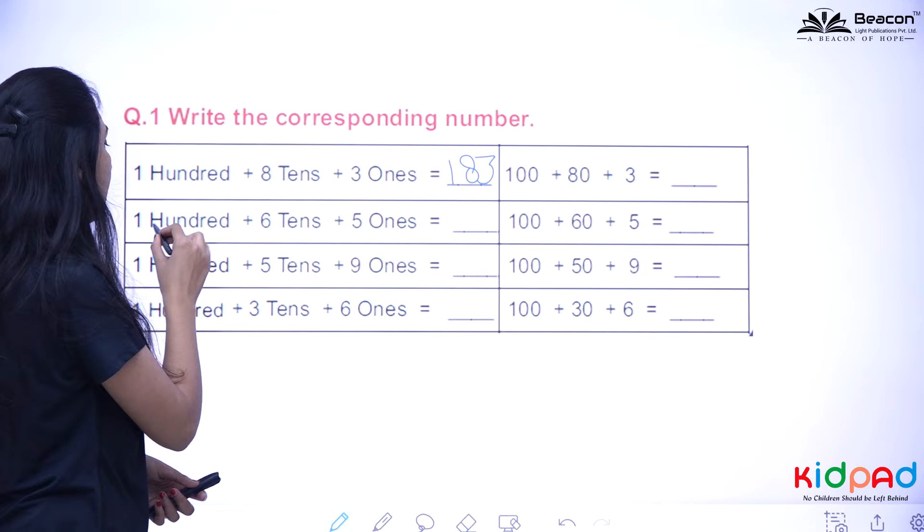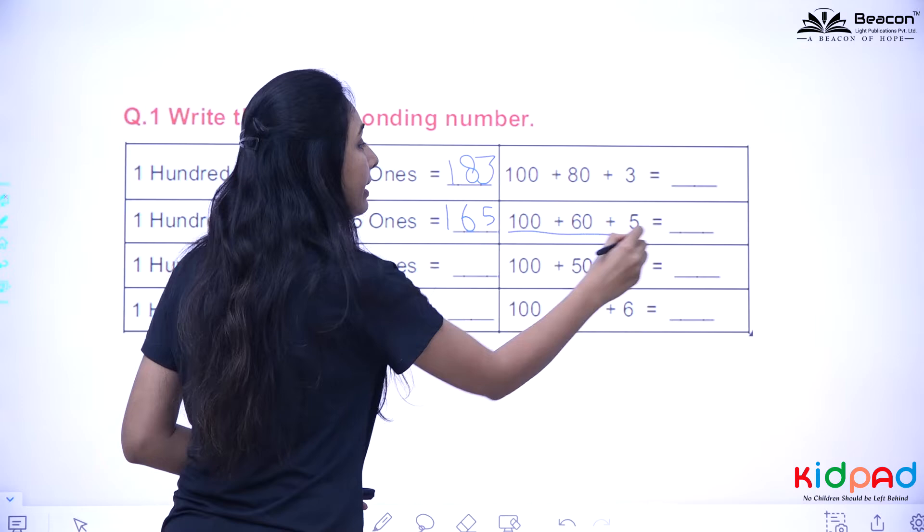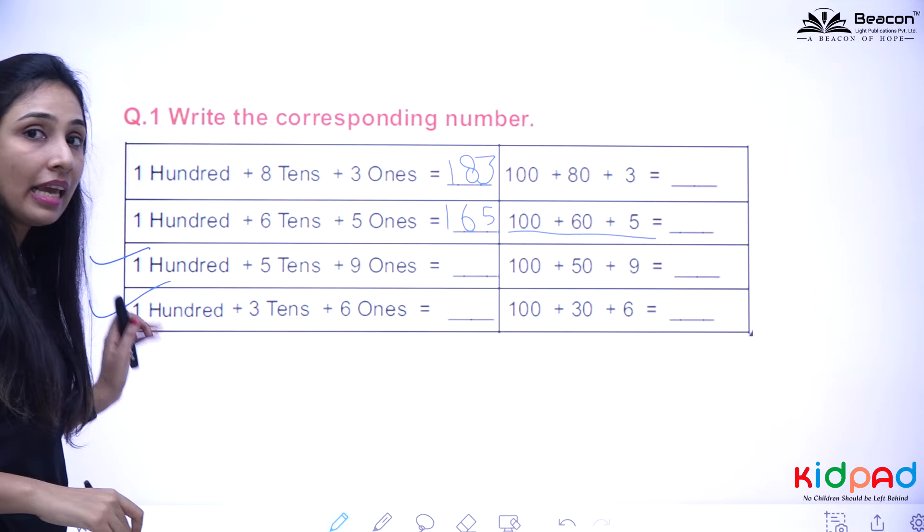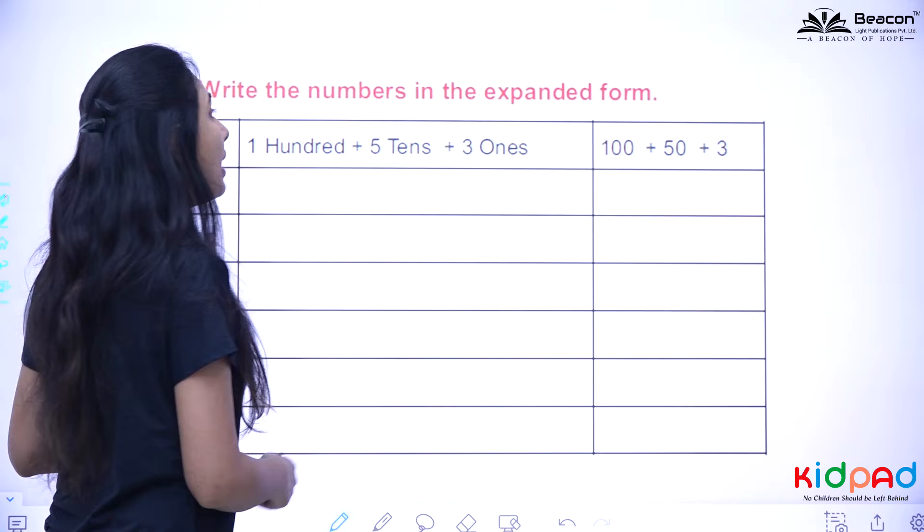Similarly, one hundred, six tens plus five ones. That will make it 165. Add the numbers and you will get it. Similarly, these two are your homework. You have to do homework in your notebook.